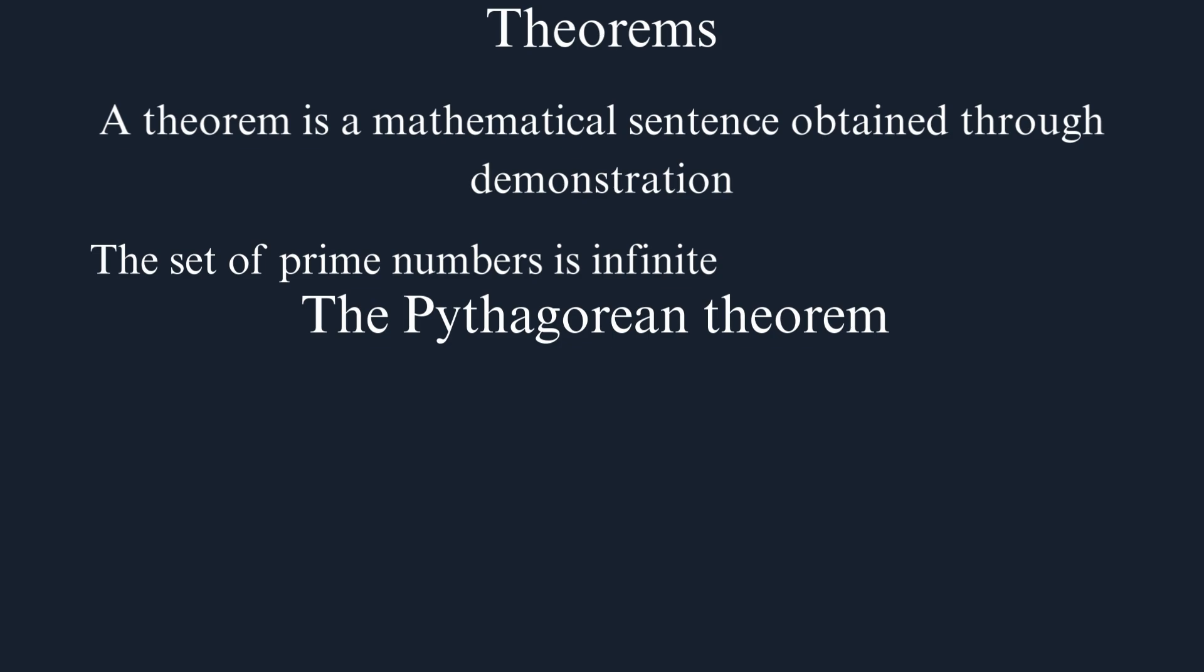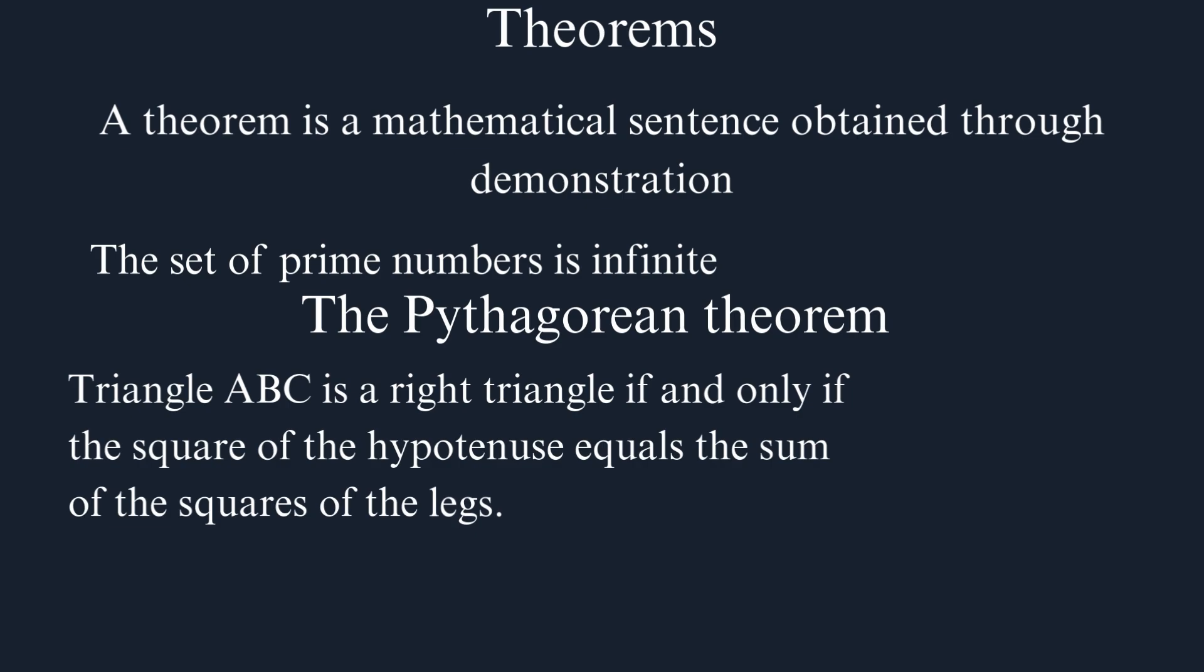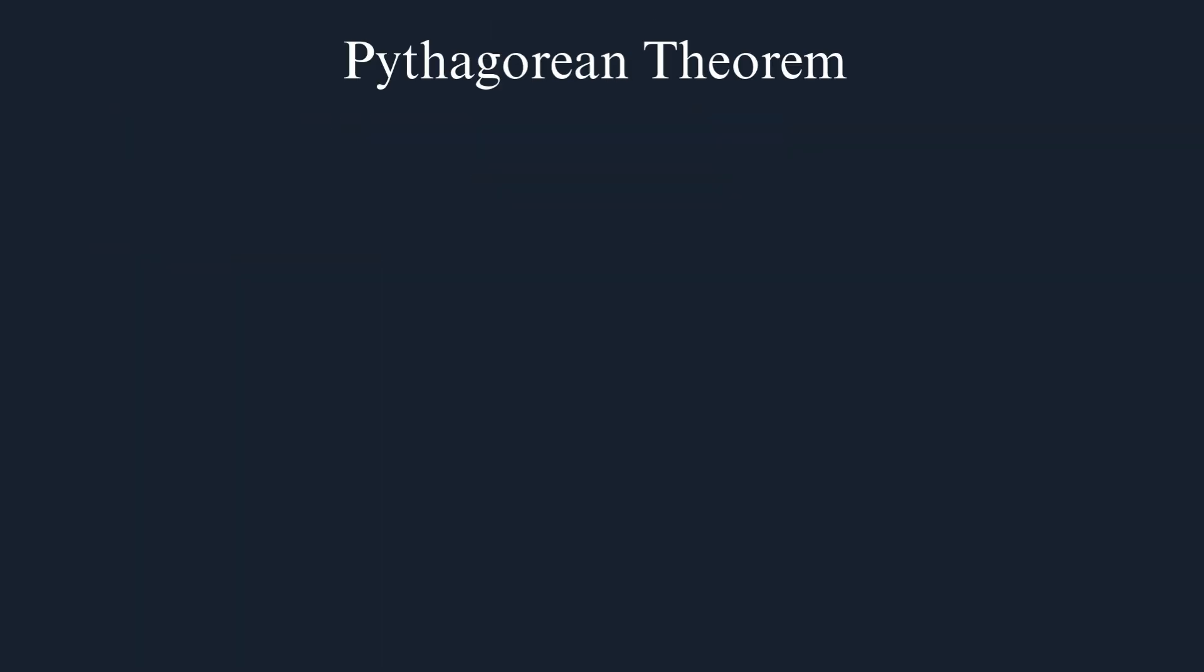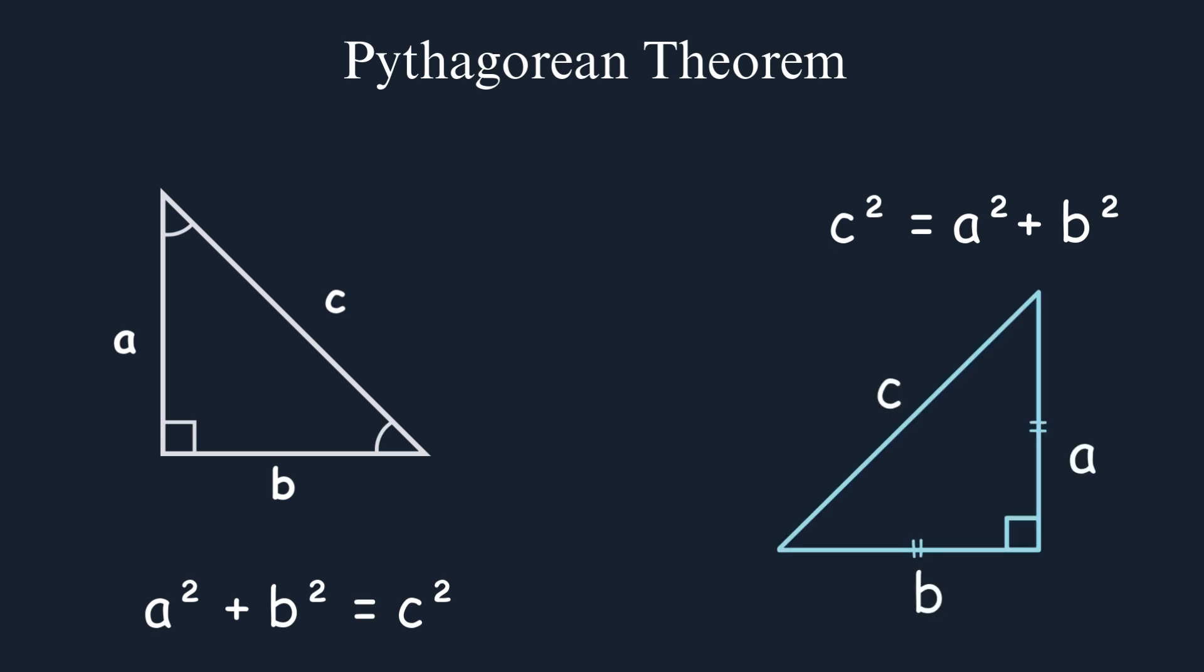Possibly the most famous theorem in mathematics. It says that triangle ABC is a right triangle if, and only if, the square of the hypotenuse equals the sum of the squares of the legs. What does this if, and only if, mean? It means that both directions are valid. That is, if a triangle is a right triangle, then the square of the hypotenuse equals the sum of the squares of the legs. But the reverse also holds. If the square of the hypotenuse equals the sum of the squares of the legs, then this triangle is a right triangle.